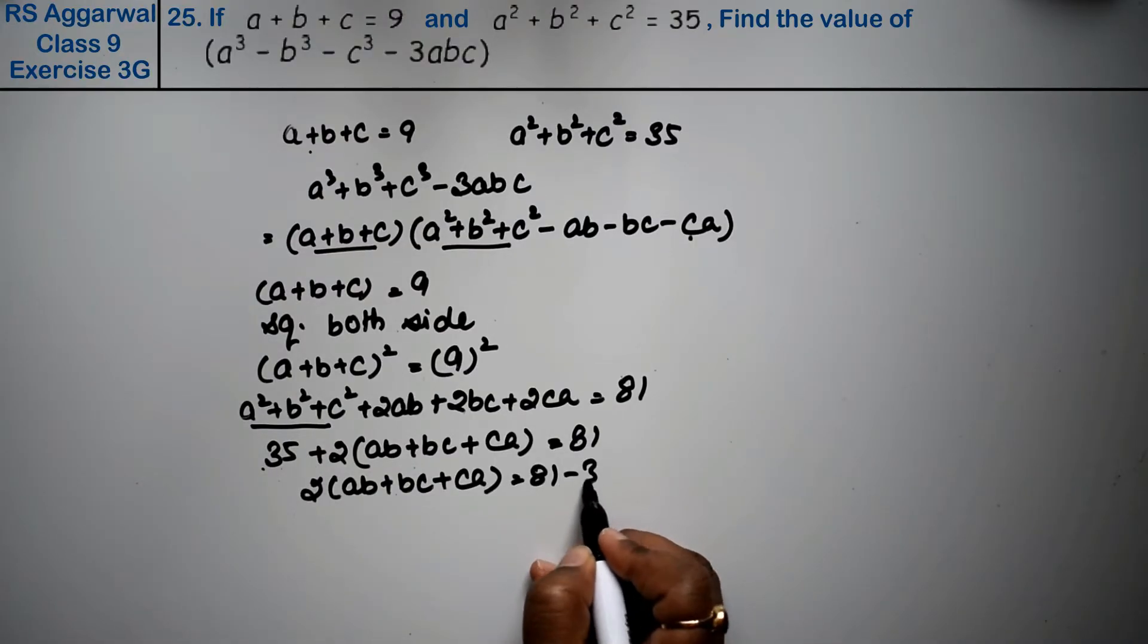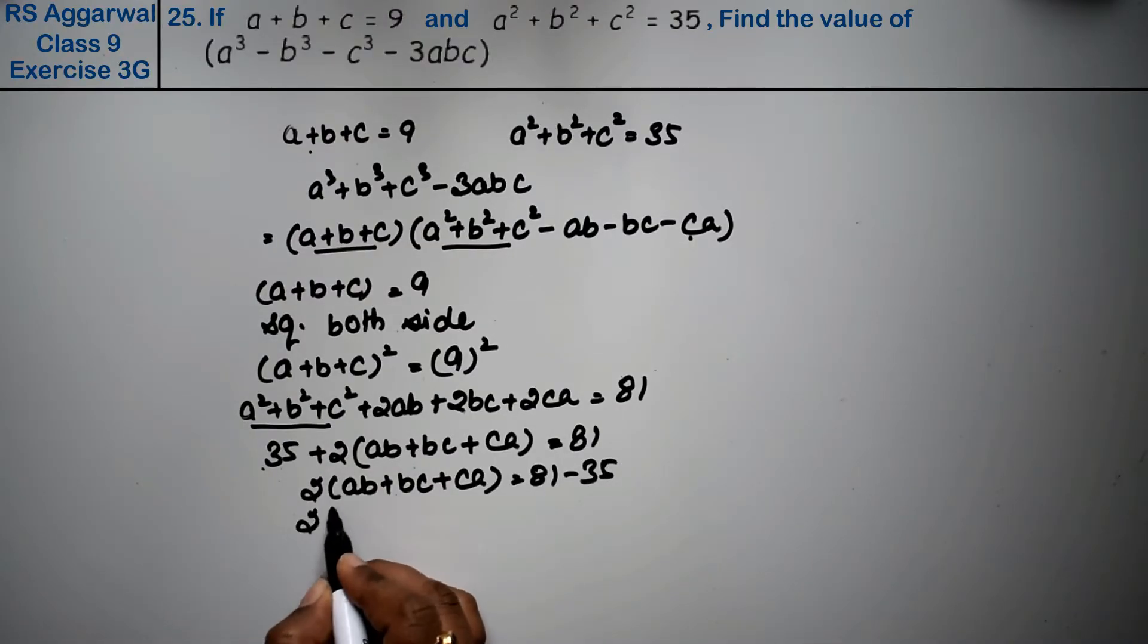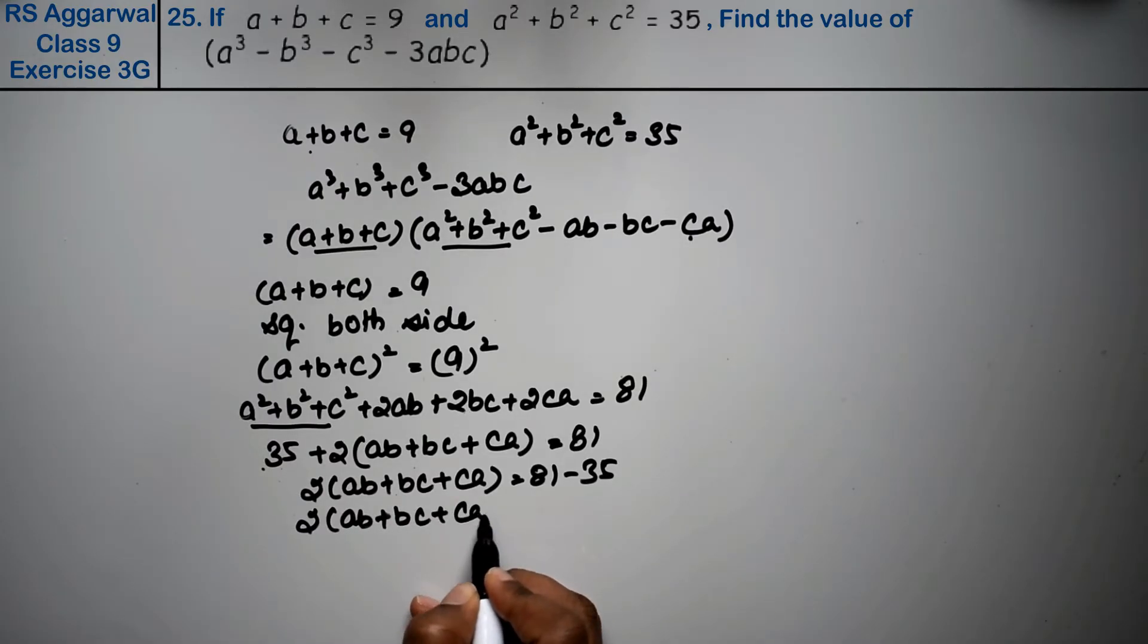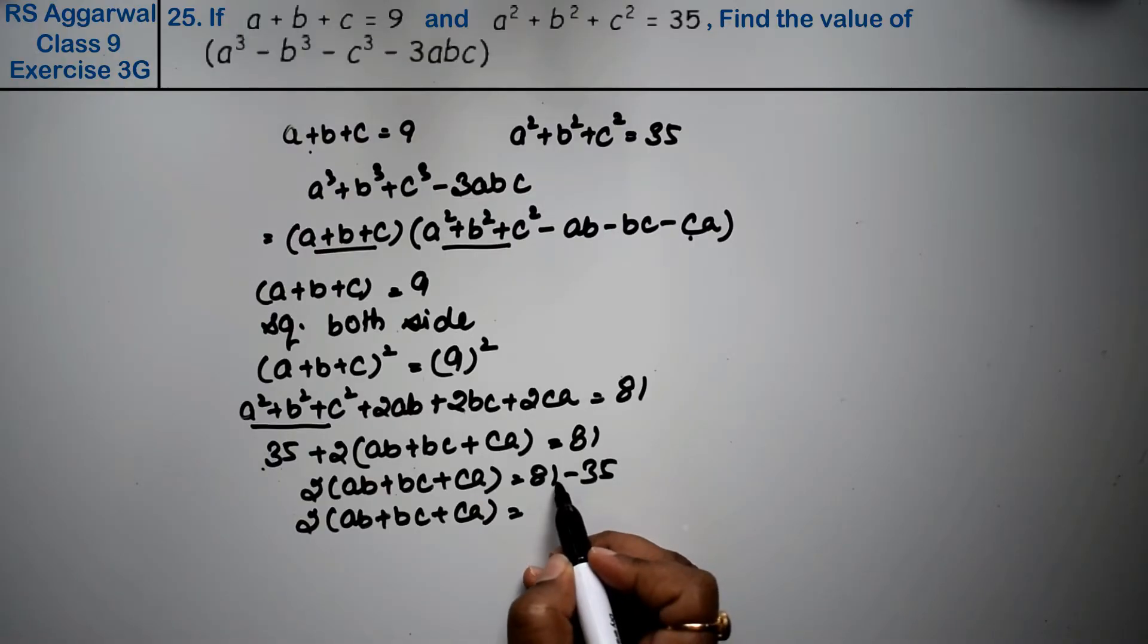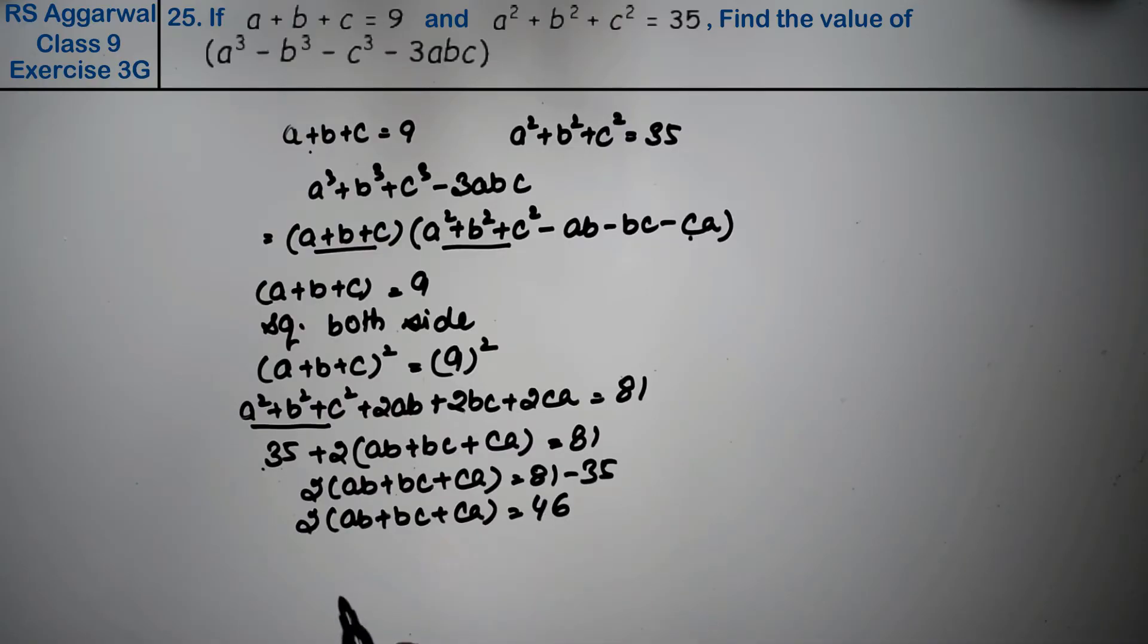So twice of ab plus bc plus ca, how much is it? 81 minus 35. 1 from 5 is 6, and 7 from 3 is 4. So ab plus bc plus ca value is 46 divided by 2, which is 23.